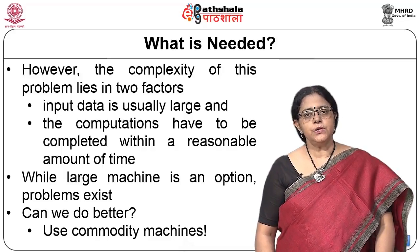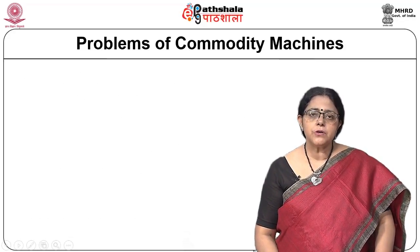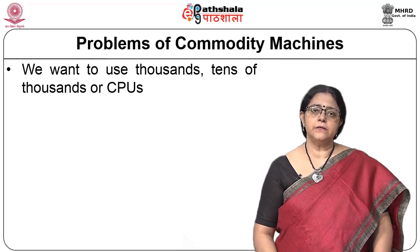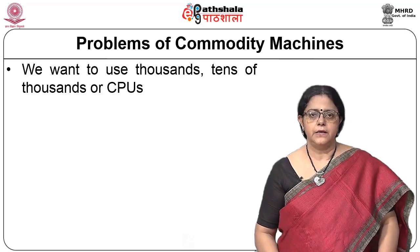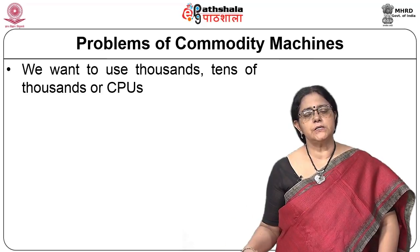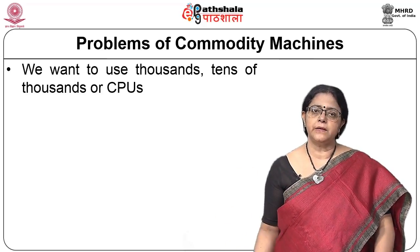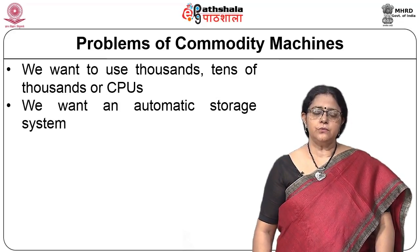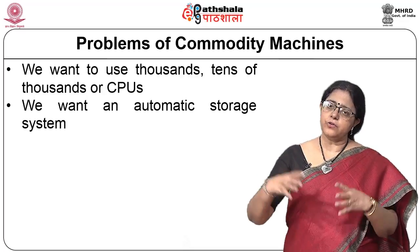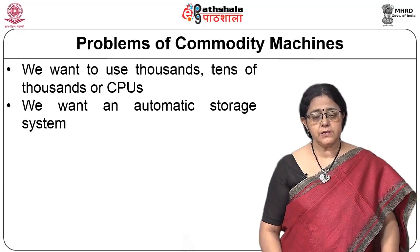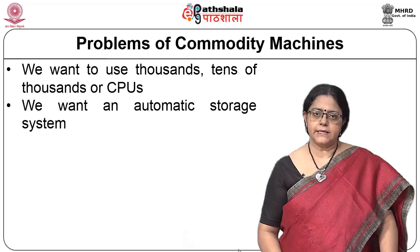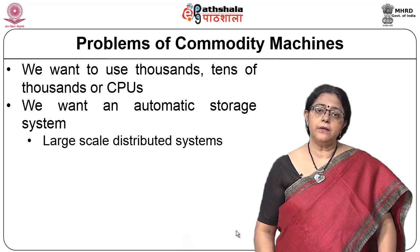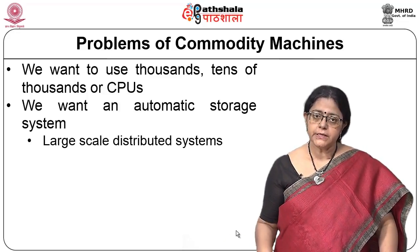The solution is to use commodity computers — general workstations that are not very expensive and are easily available and procurable. How many of these machines will be sufficient to churn terabytes or petabytes of data? We actually need thousands — tens of thousands — of such machines. We also need corresponding storage attached to these processors to make the data available as needed. This can be done using commodity machines only when we have a distributed storage system.